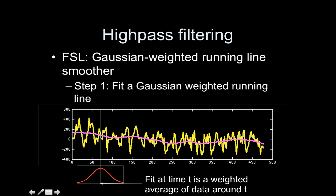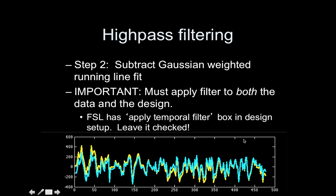So this pink line shows us what the drift looks like — it's high, then goes down and dips. Then all you do is subtract that pink line from the yellow line, and you get the cyan line, which is nice and flat. It brought down the uphill portion in the beginning and this little downhill chunk in the middle. That's the second step — simply subtract. And you must apply this filter both to your data and the design. Basically, you have to keep the 'apply temporal filter' box in the design setup checked in FSL, otherwise your data and design won't match.